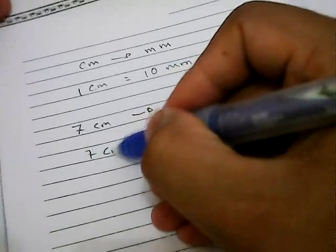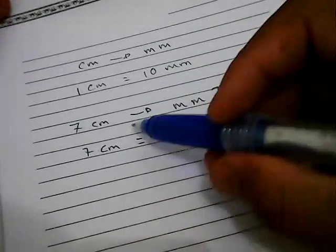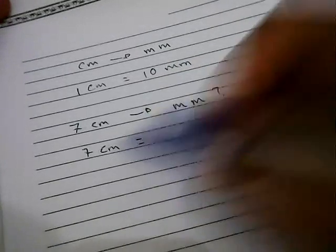Then you need to put an equal sign, and then you need to write down this 7 again.